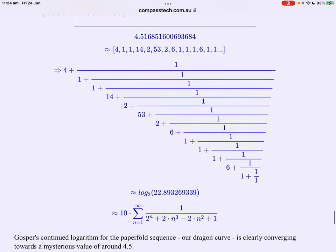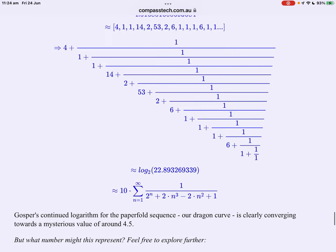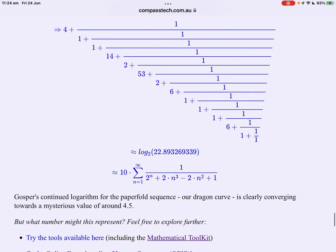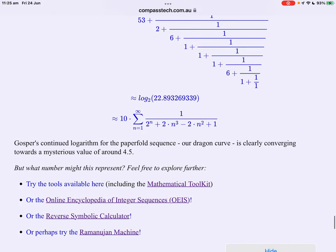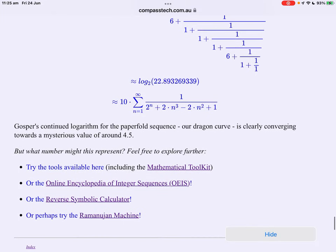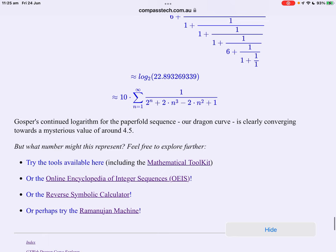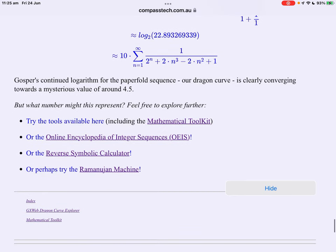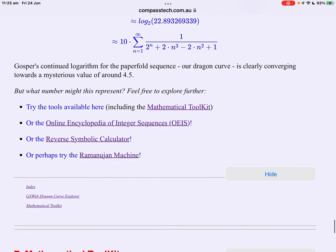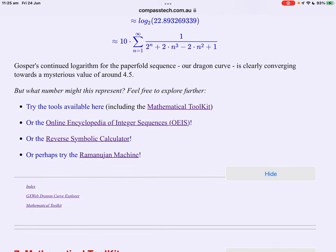Now I've been looking into it, I've been doing some scratching around and I've found that it's very very close to the log base 2 of 22.89. It's also very very close to 10 times that sum. It's clearly converging towards a mysterious value about 4.5 but what might this represent, what number could this be? It's an open question and an open question in mathematics is an invitation to explore.